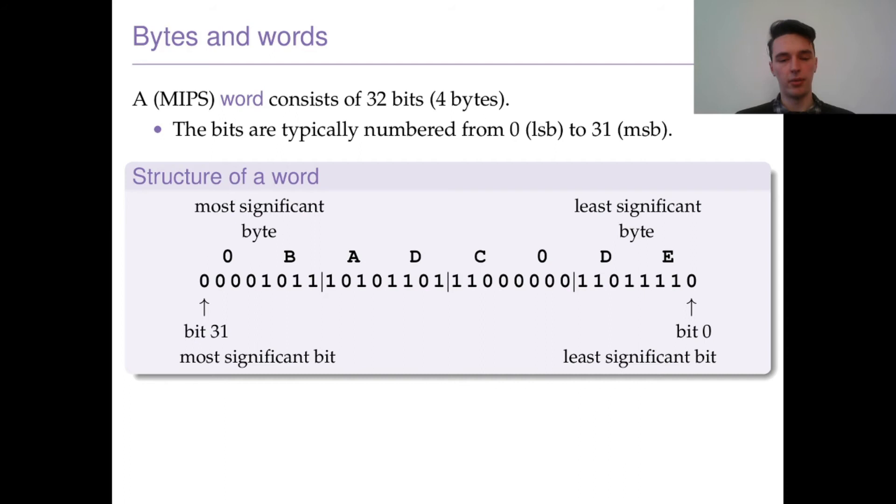Why we would want to look at hexadecimal is because of this idea in MIPS of a word. Actually, it's not just in MIPS, but the idea of a word in MIPS is 32 bits, which is four bytes. They're normally numbered from the least significant bit up to the most significant bit. If we were to write out 32 bits every time, that would become quite cumbersome, so it's reasonable to break it down into bytes and then into hexadecimal numbers.